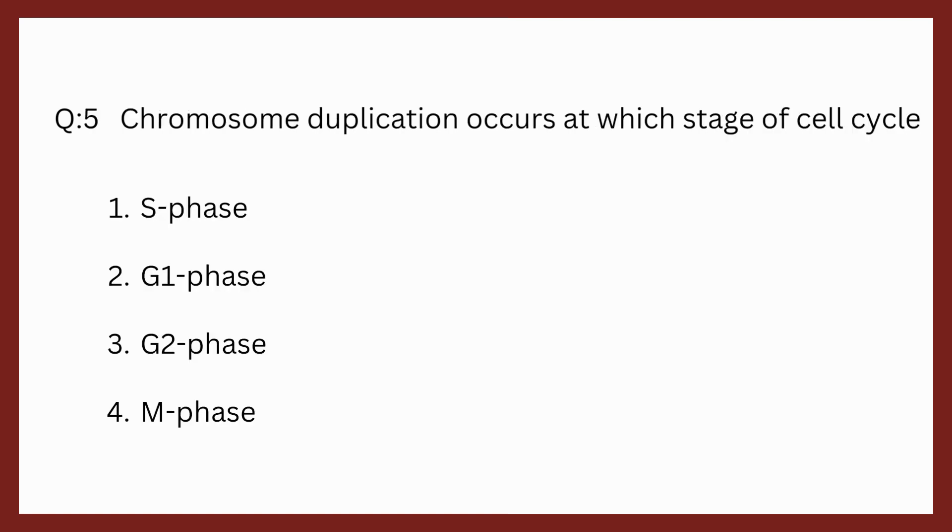Question 5. Chromosome duplication occurs at which stage of cell cycle? Options are S phase, G1 phase, G2 phase, M phase. The correct option is S phase. We know that DNA replication and chromosome duplication both occur at the stage of S phase.